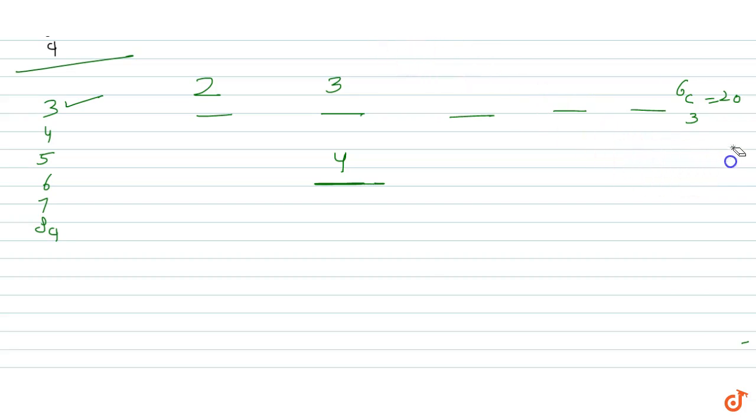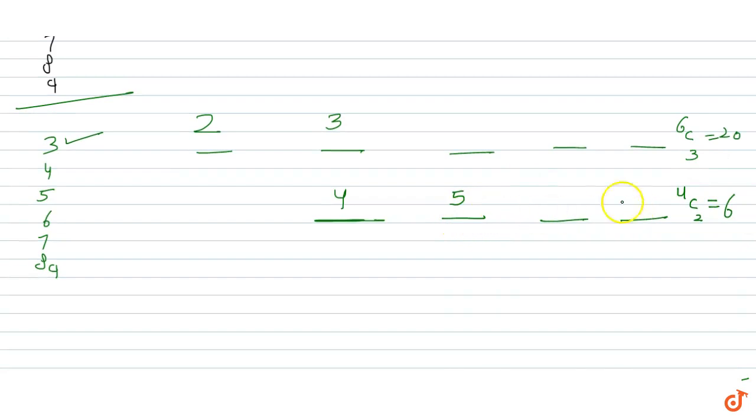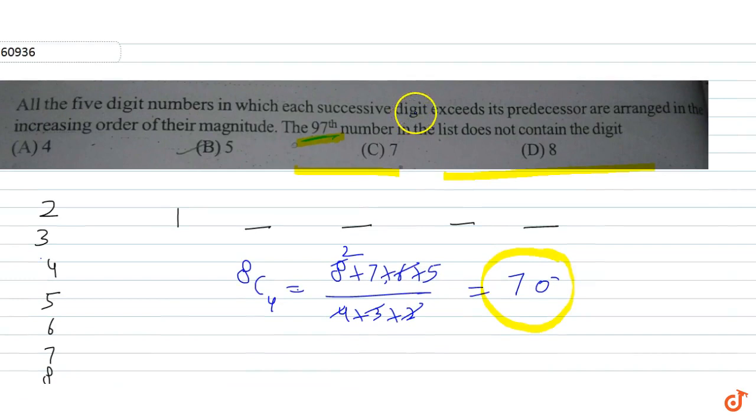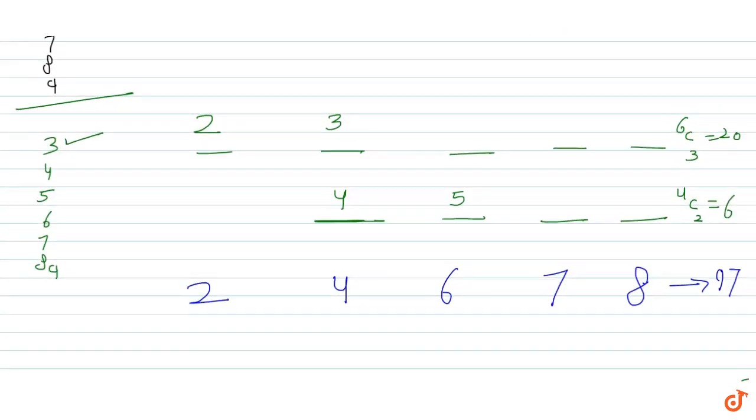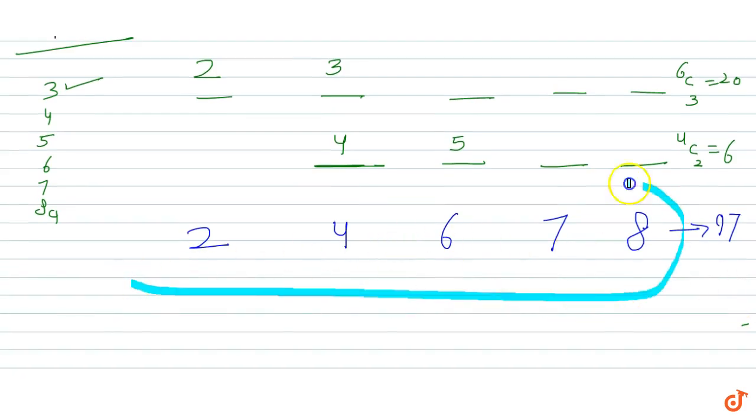Next possible digit, the smallest is 5. So if we have 5, then we have 6, 7, 8, 9. So we have 4C2 which is 6 ways. So now how many are we up to? 70, 20, and 6 equals 96. Now 5 is covered. So next what will happen? 2, 4, then the smallest number possible 6, then 7, and then 8. So this is the 97th number. We have to ask which number is not in the list. So 24678, so 5 is not our number. 24678 is our 97th number.